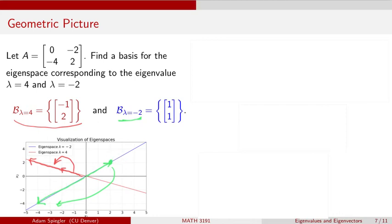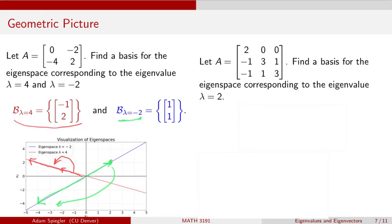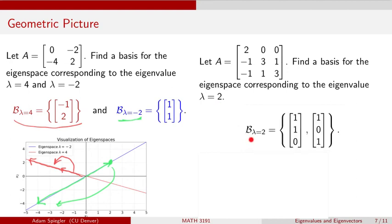Now let's look at the picture for the 3 by 3 matrix A with first column 2, -1, -1, second column 0, 3, 1, and third column 0, 1, -3. We were told λ = 2 is an eigenvalue, and we found that a basis for the eigenspace of λ = 2 consists of two vectors: (1, 1, 0) and (1, 0, 1).